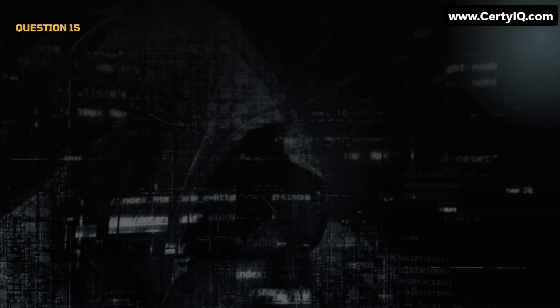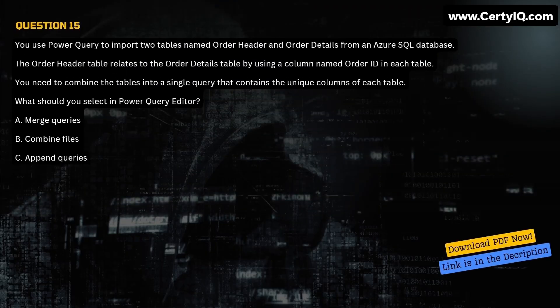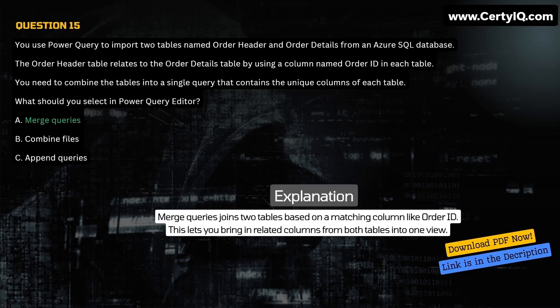Question 15. You use Power Query to import two tables named OrderHeader and OrderDetails from an Azure SQL database. The OrderHeader table relates to the OrderDetails table by using a column named OrderID in each table. You need to combine the tables into a single query that contains the unique columns of each table. What should you select in Power Query Editor? A. Merge Queries. B. Combine Files. C. Append Queries. Correct answer is A. Explanation: Merge Queries joins two tables based on a matching column like OrderID. This lets you bring in related columns from both tables into one view.